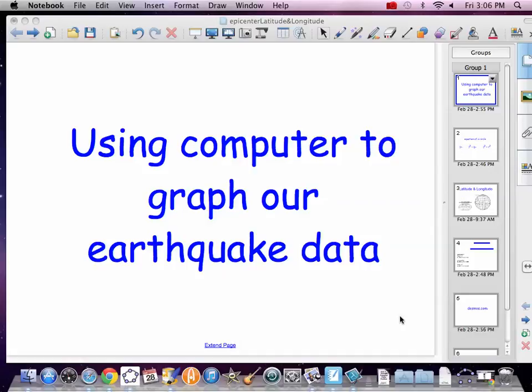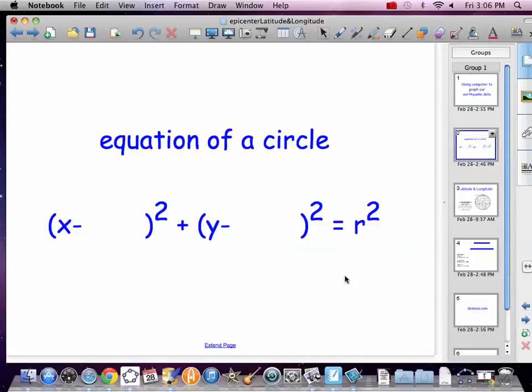So we're going to have to write the equations of circles. You've got to remember the equation of a circle: x squared plus y squared equals r squared, and usually x and y are offset because they are not always centered at 0, 0.